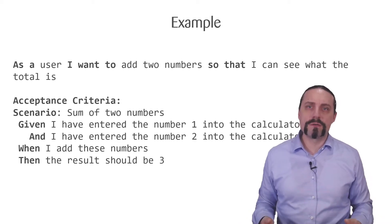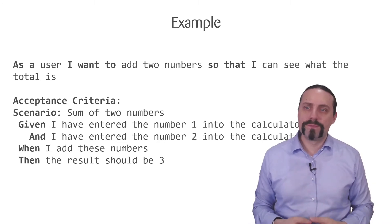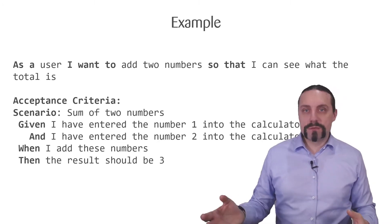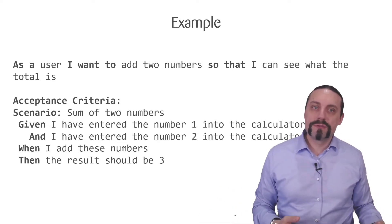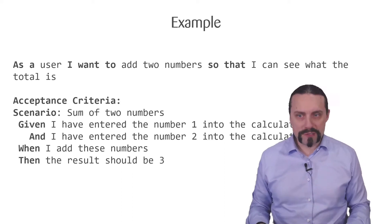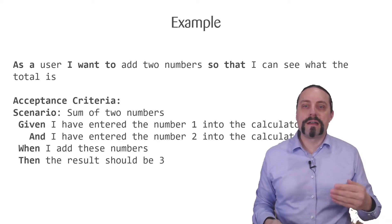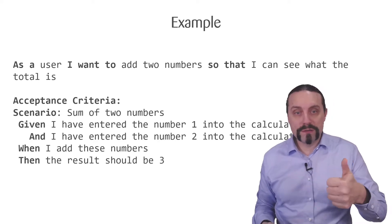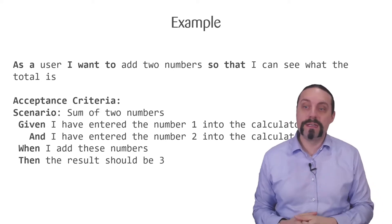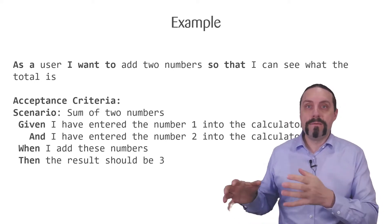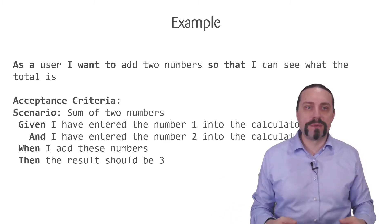Let's have a look at an example. Here we have the user story of a calculator where we are adding two numbers. As a user I want to add two numbers so that I can see what the total is. The acceptance criteria is: given I have entered the number one into the calculator and I have entered the number two into the calculator, when I add these numbers, then the result should be three.